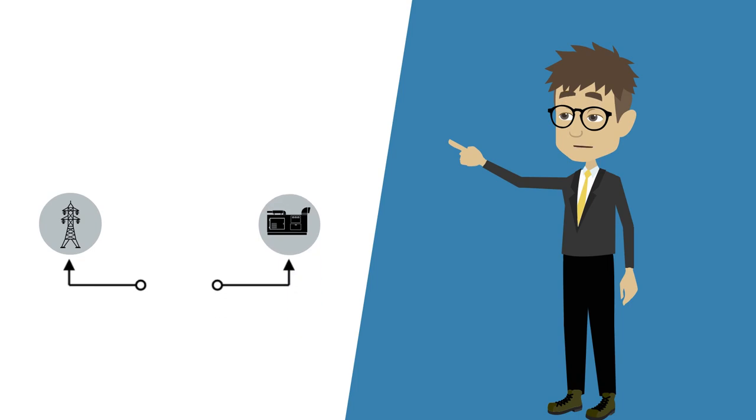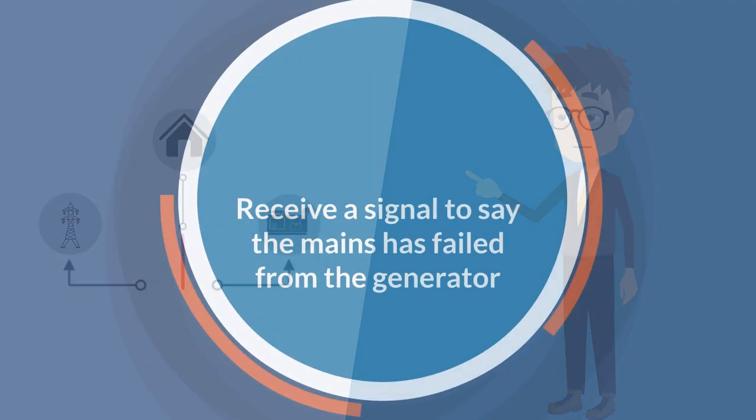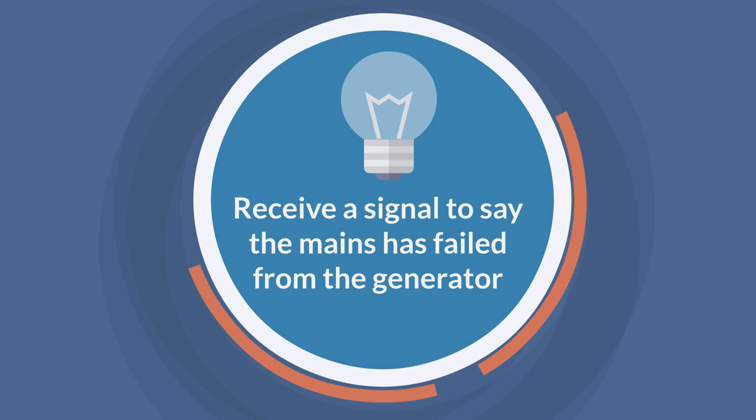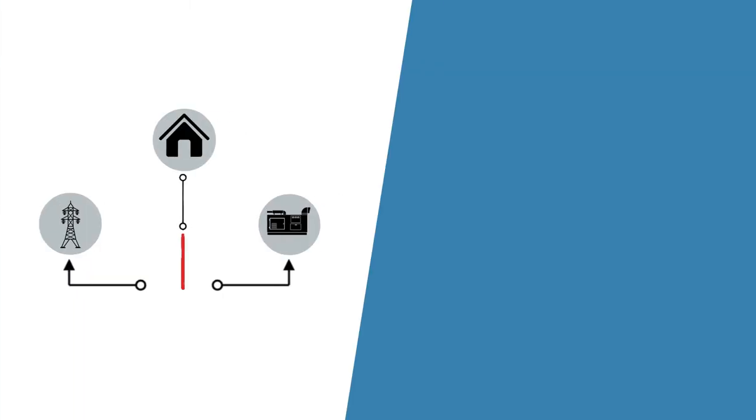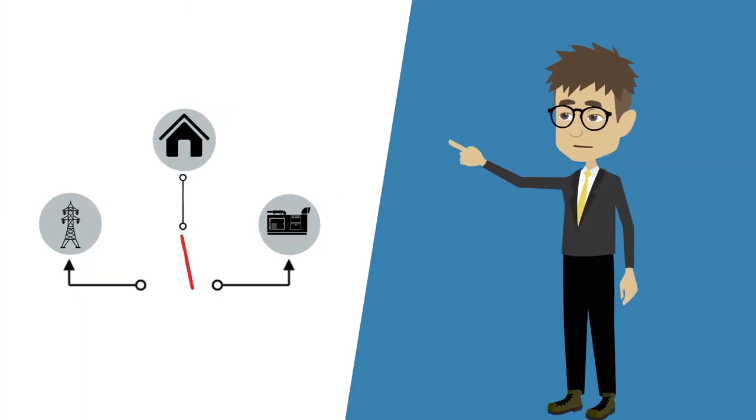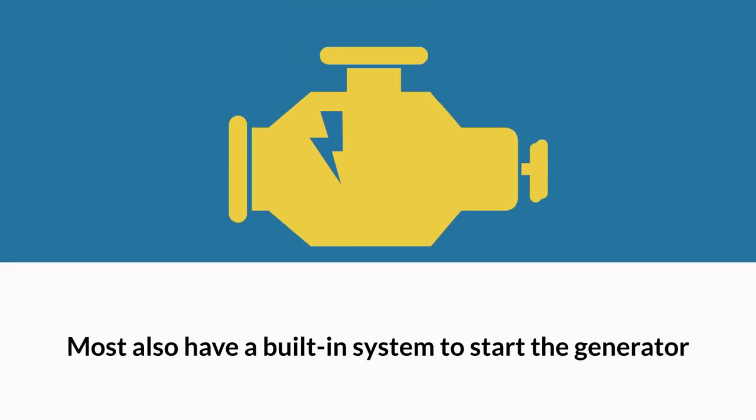Automatic transfer switches either have a method of detecting the mains failure or receive a signal to say the mains has failed from the generator. They then switch between the mains and the generator automatically. Most also have a built-in system to start the generator when the mains electricity fails.